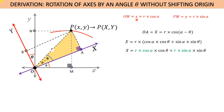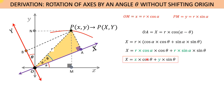We already know that r·cos(alpha) equals small x and r·sin(alpha) equals small y. Substituting r·cos(alpha) by x and r·sin(alpha) by y, we get capital X equals x·cos(theta) plus y·sin(theta).